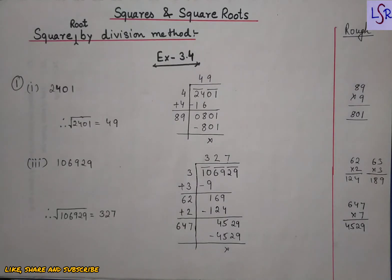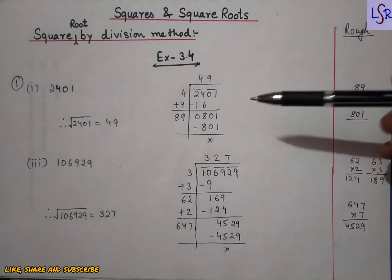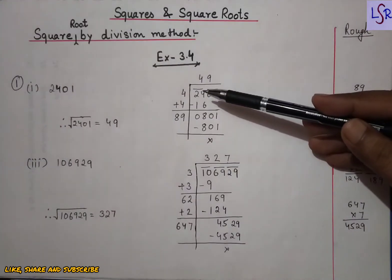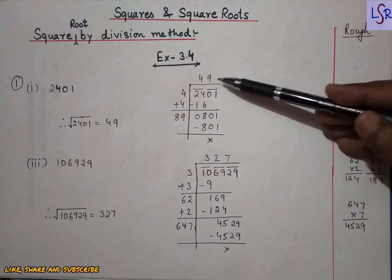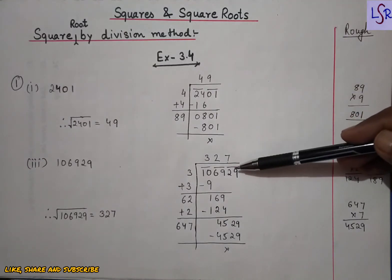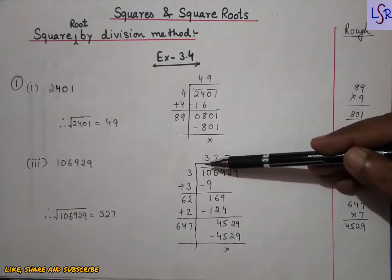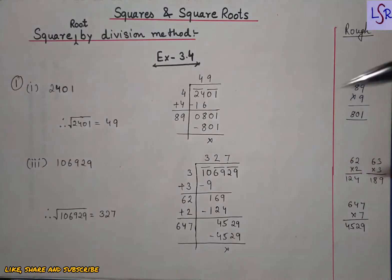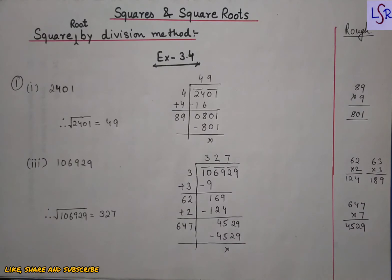One key point: when we had 2 pairs, our answer was in 2 digits. Here we have 3 pairs, so our answer is in 3 digits. The number of pairs decides the number of digits of the square root.